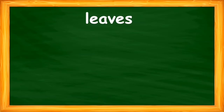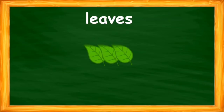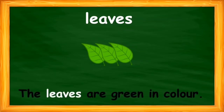The word is 'leaves'. Children, please repeat after me — the word is 'leaves'. What does 'leaves' mean? Leaves refer to more than one leaf. Look at this image — you can see a few leaves. I have used the word 'leaves' in a sentence like: the leaves are green in colour.